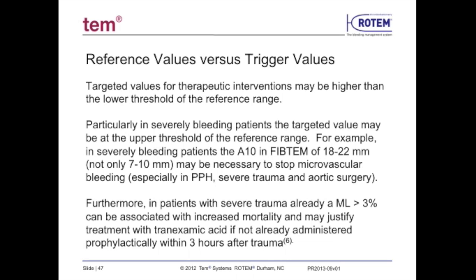After some experience using Rotem, adjusting trigger points to meet the clinical condition will become more intuitive. There will also be cases where parameters may demonstrate results lower than the reference range without evidence of clinically significant bleeding — in these cases, Rotem analysis can indicate a relative risk of bleeding or hemostatic reserve. In patients with severe trauma, an ML greater than 3% can be associated with increased mortality and may justify treatment with tranexamic acid if not already administered prophylactically within 3 hours after traumatic injury.